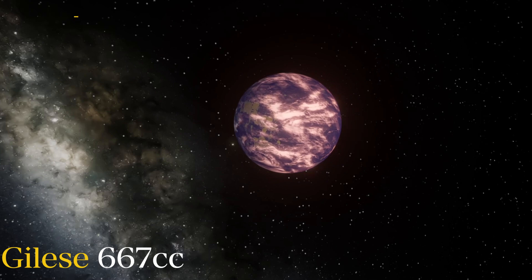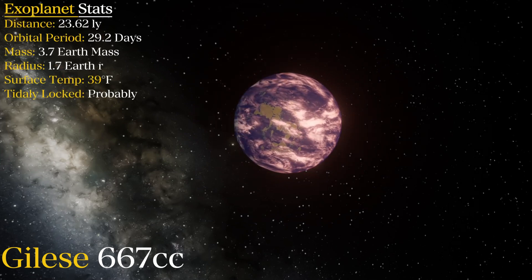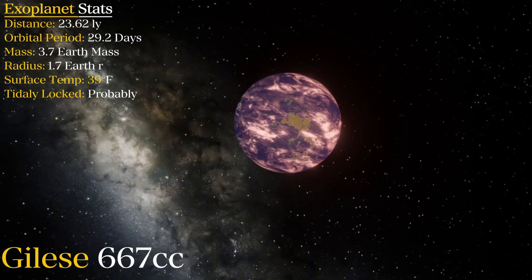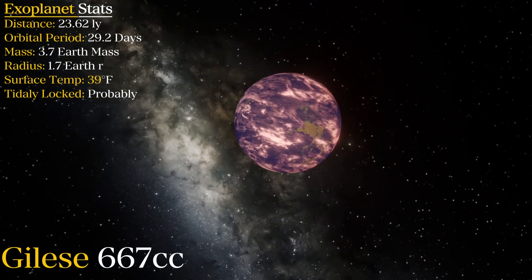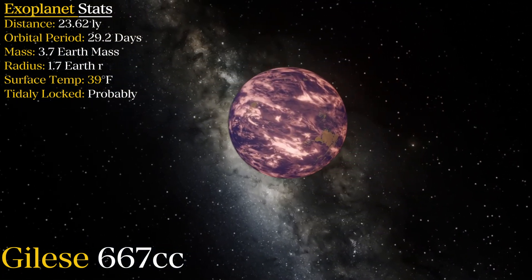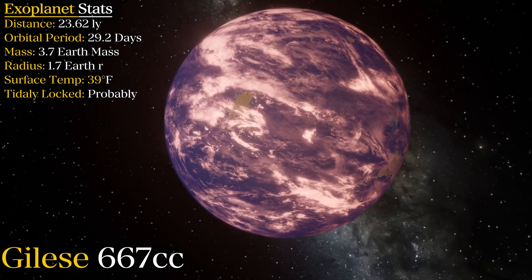Gliese 667 cc is a super-Earth, an exoplanet with a mass and radius greater than that of Earth, but smaller than that of gas giants such as Uranus and Neptune.